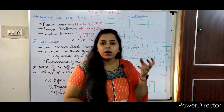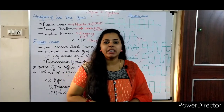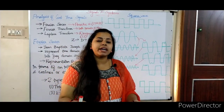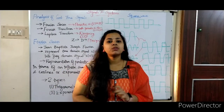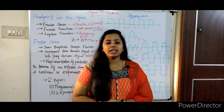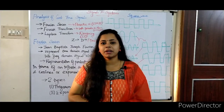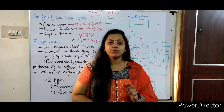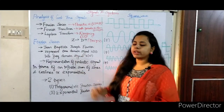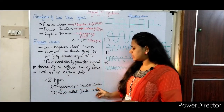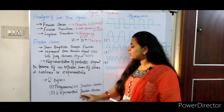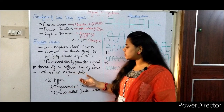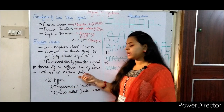If we identify the noise signal, it will be easy to filter it. Applications include audio signal processing, image processing, and crystallography. The Fourier series is of two types: one is the Trigonometric Fourier series, expressed in terms of sines and cosines, and the other is the Exponential Fourier series, expressed as complex exponentials.